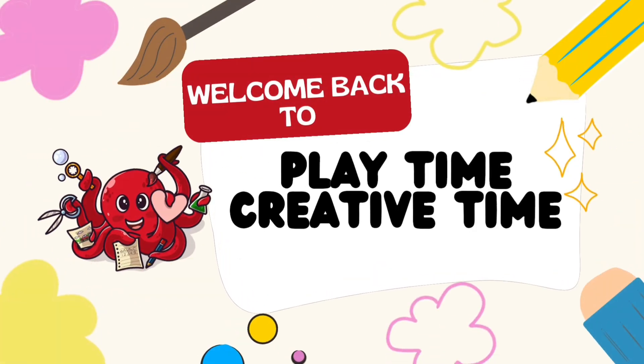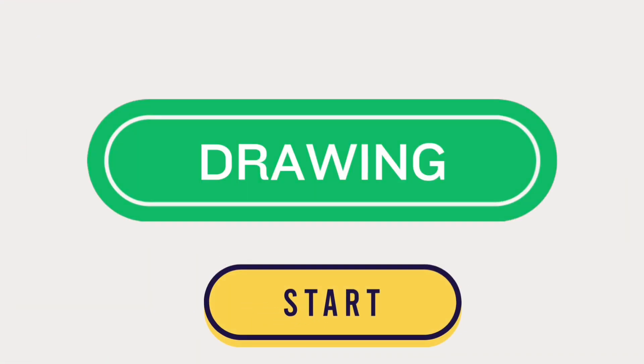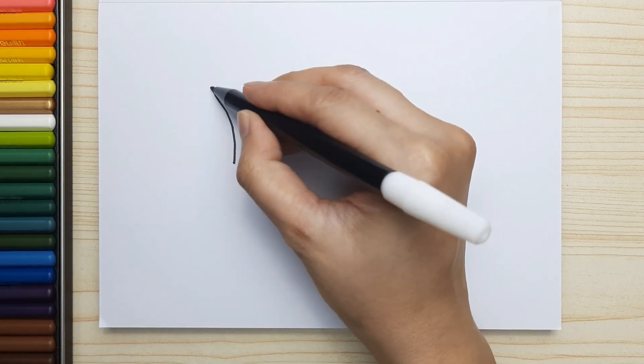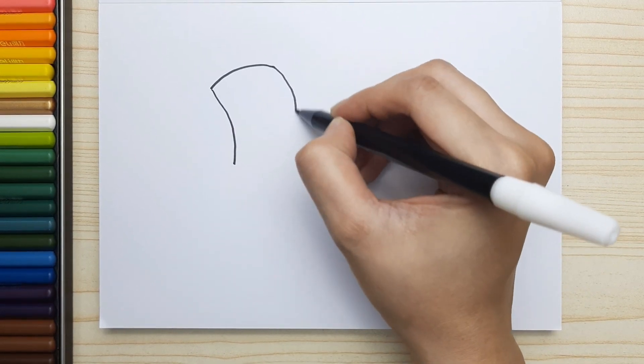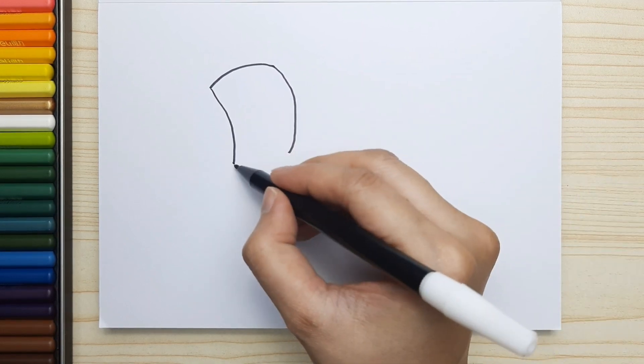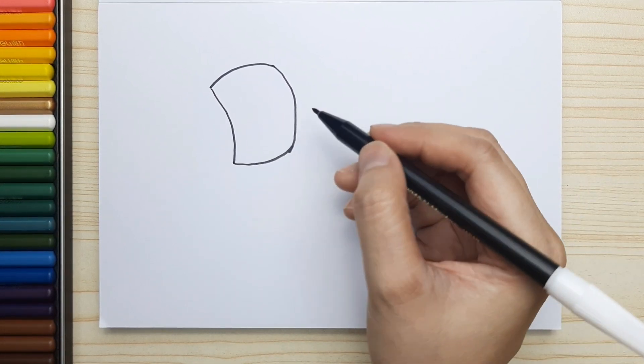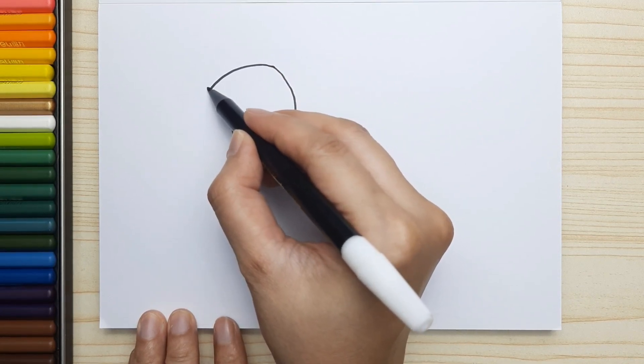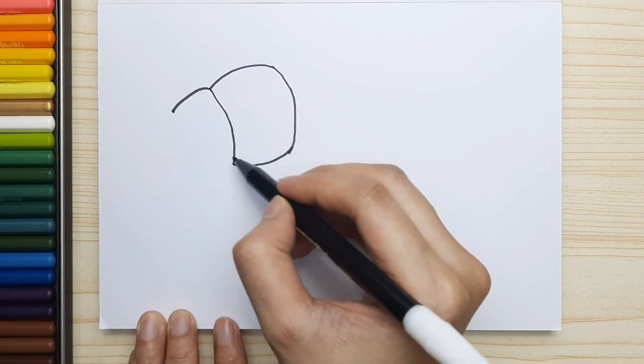Hi friends, welcome back to Playtime Creative Time and we're gonna be drawing together. In this video we're gonna be drawing a croissant. First, let's draw this shape and now we're gonna add the ones on the left.